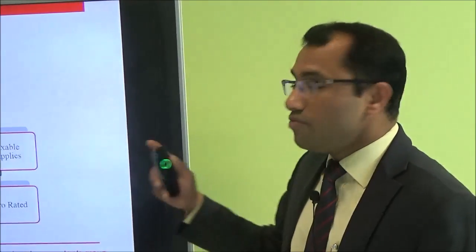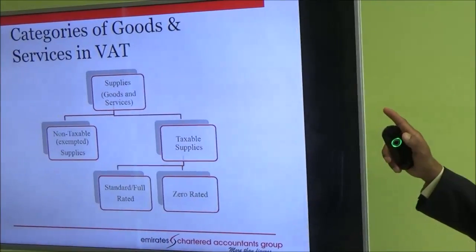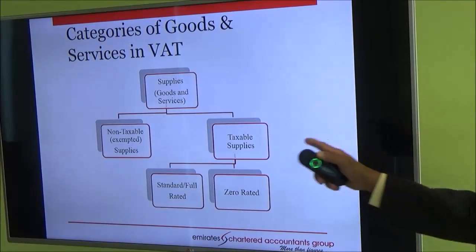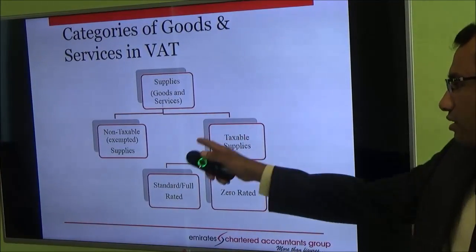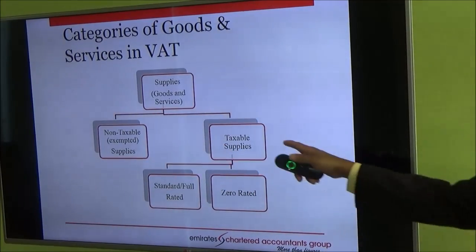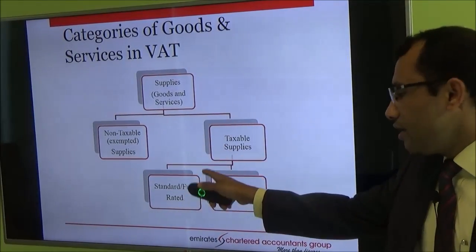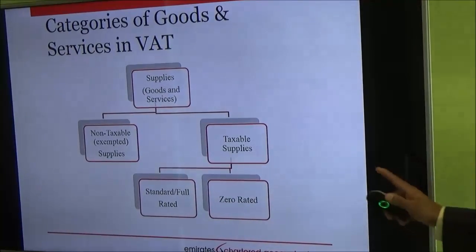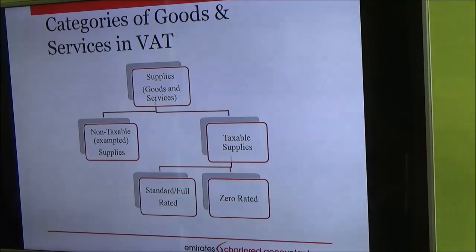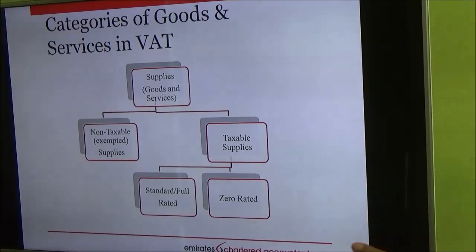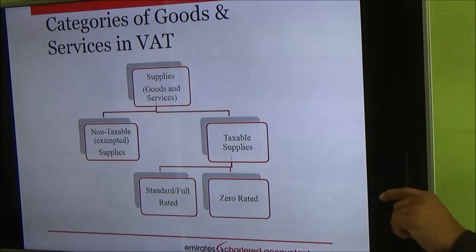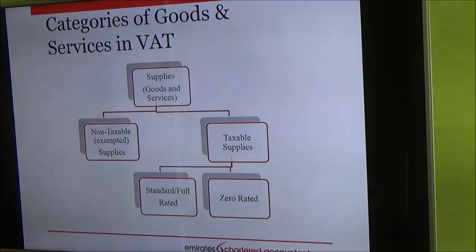Now let us look at the types or categories of goods and services in VAT. Supplies — goods and services — are either taxable or not taxable. Not taxable is called exempted. Under taxable, there are two sub-categories: standard or full-rated at 5%, and 0-rated. So in VAT in UAE there are only three categories: exempted, 0-rated, and full-rated at 5% — a very simple calculation.